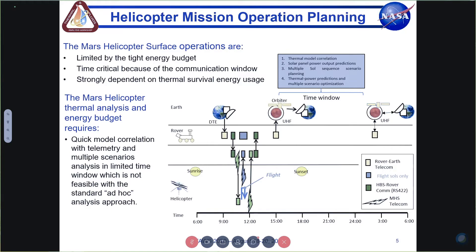Now we get into the motivation for reduced order modeling. A day in the life of helicopter mission ops involves communication between Earth, the rover, and the helicopter. In the morning, Earth communicates with the rover, which gives commands to the helicopter. On flight day, the helicopter performs its mission — typical flights around 15 minutes — then relays telemetry back to the rover, which relays it back to Earth. The biggest challenge is that once we receive telemetry, we have only a limited window of time to act on it for mission planning for the next day.